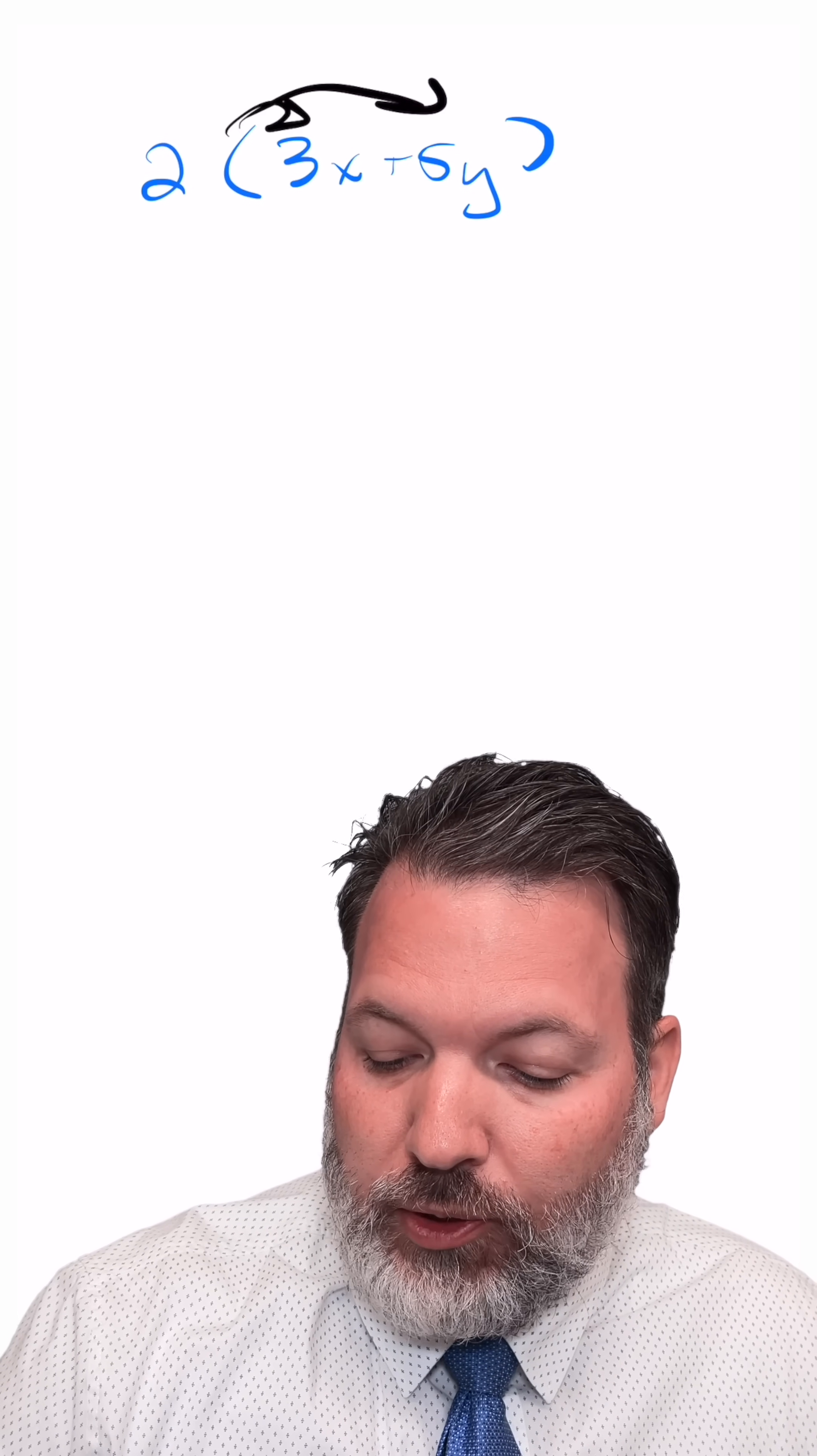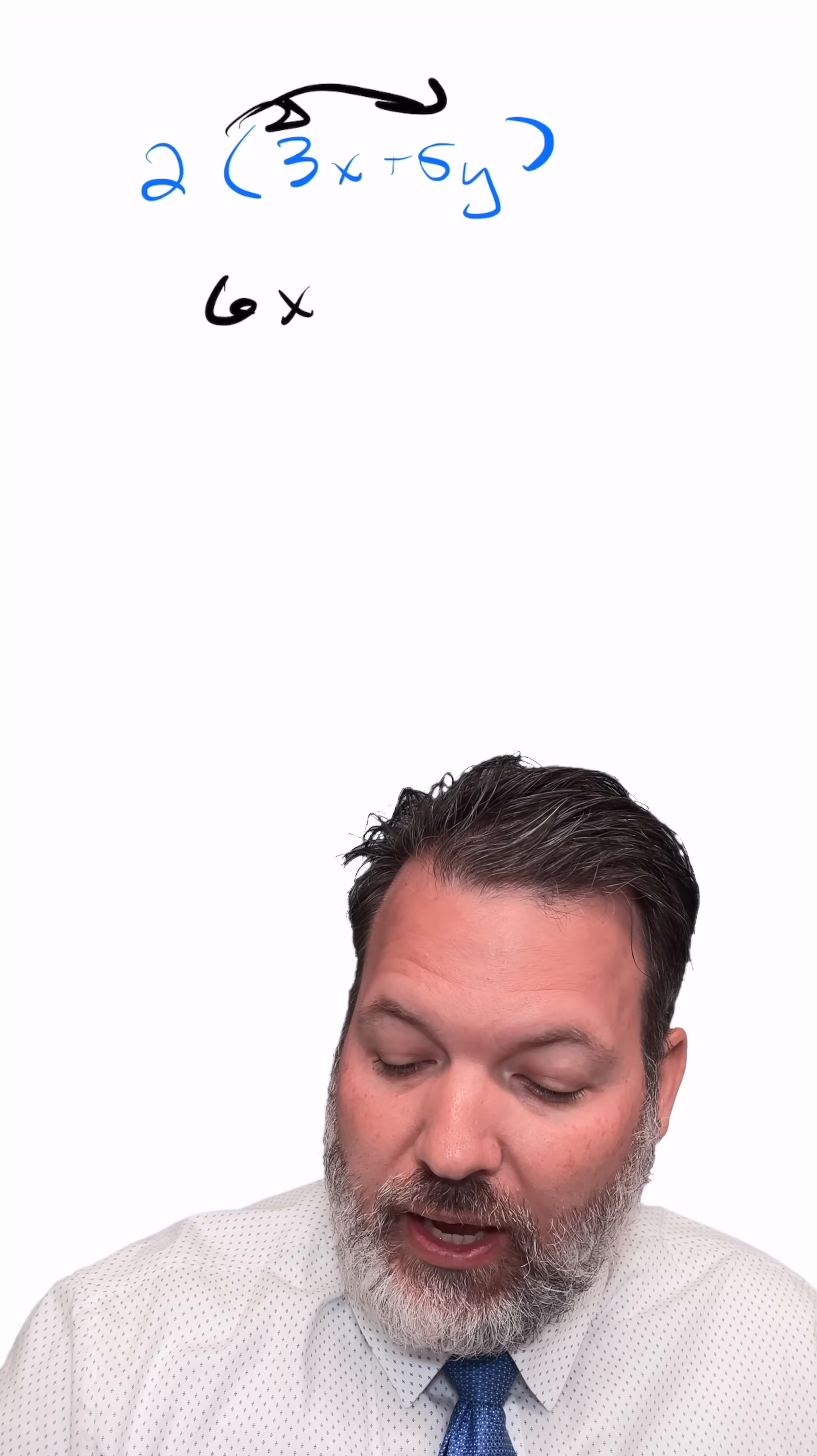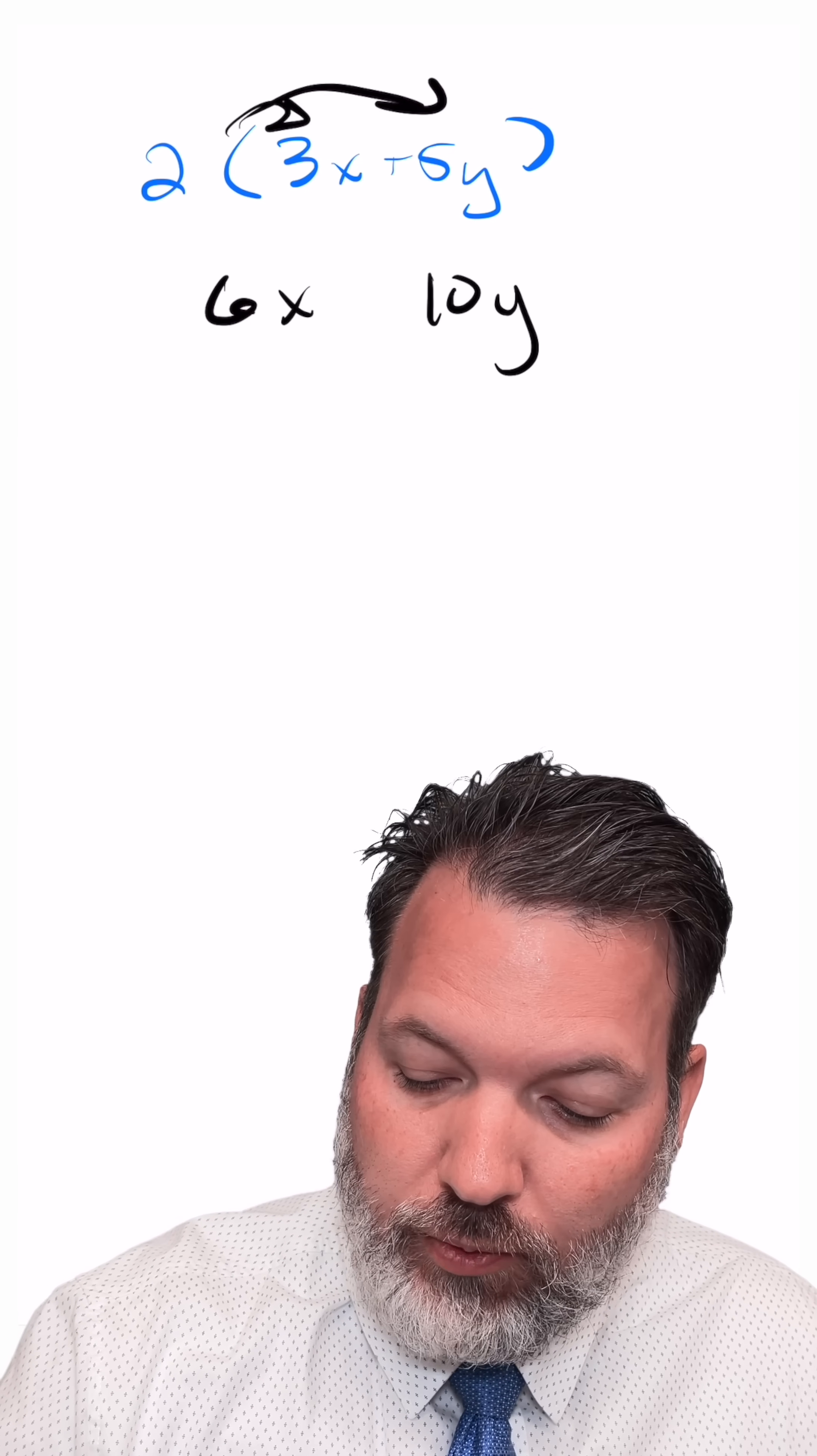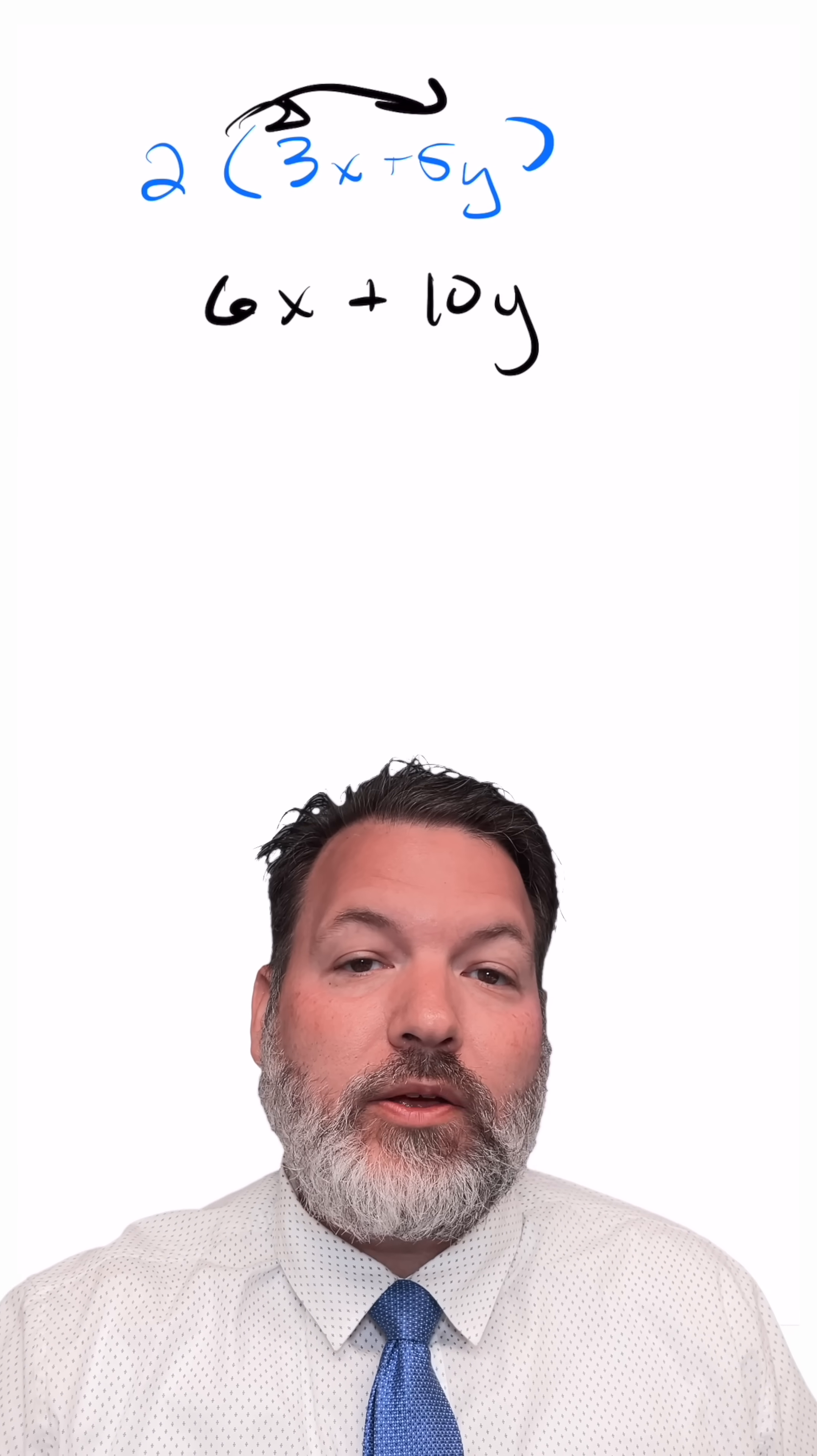Here what that looks like is multiplying 2 times 3x, which gives us 6x, and then 2 times 5y, which gives us 10y, and then adding those two things together.